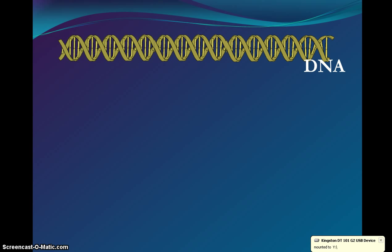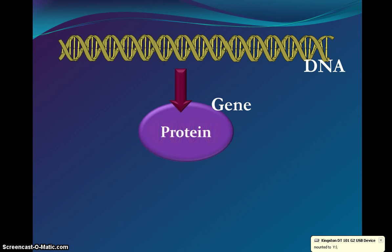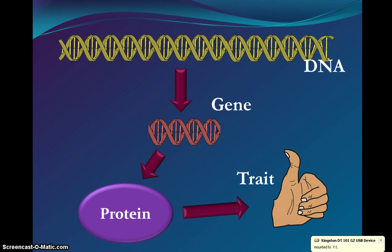DNA is this really long double helix structure. There are sections of it that code for something — they're called a gene. Genes create a code for a specific protein, and a series of proteins then codes for a specific trait. For example, hitchhiker's thumb. A little segment of DNA will code for a specific trait or phenotype. Genes code for our different skin color, eye color, hair color, whether we have hitchhiker's thumb, witch fingers, or are double jointed — all kinds of outward traits are due to these genes.